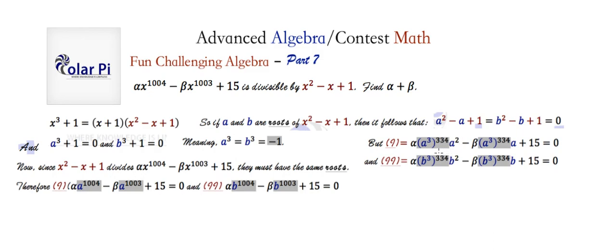That works out using exponent rules. 3 times 334 is 1002, and then plus 2 from the a squared is going to make the 1004 power on a that we need to start, multiplying alpha. You can check it basically more closely if you want.